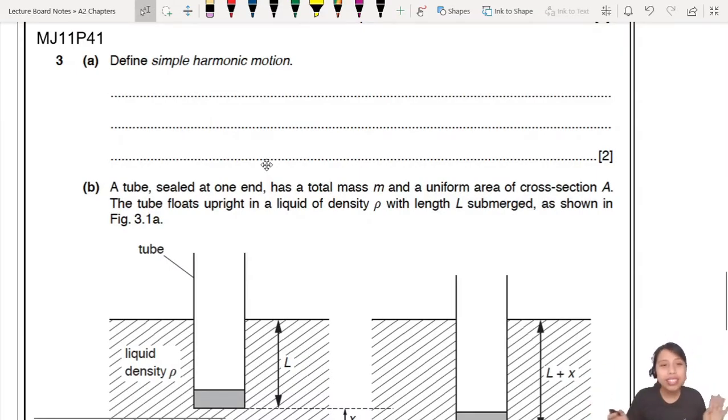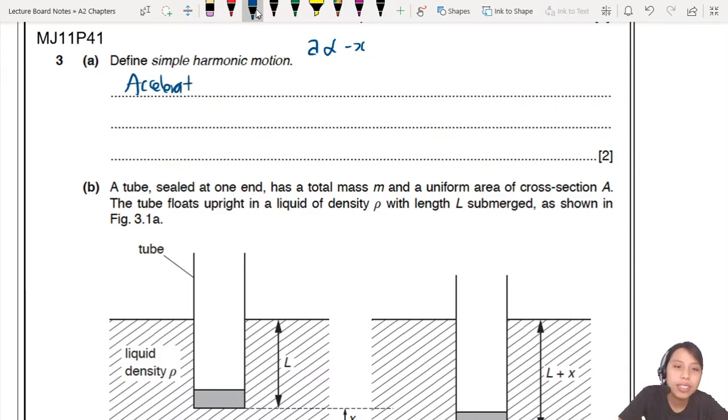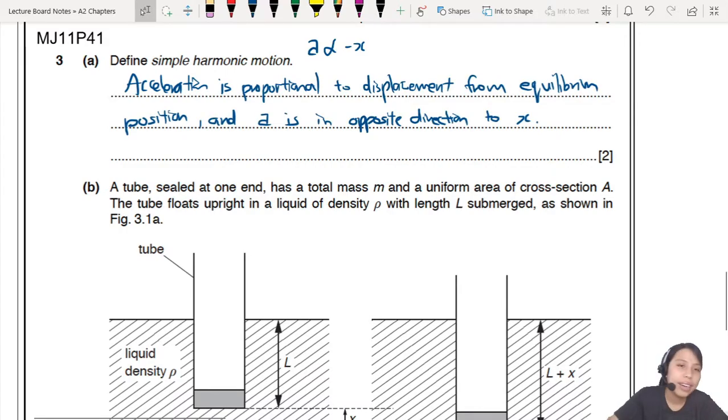First step, let's define simple harmonic motion. Pay attention, this is two marks, so you need to remember there's two key points for simple harmonic motion. One thing is your acceleration proportional to negative x. So, acceleration proportional to displacement from equilibrium position. That's probably your first mark. This is the M1 mark, just talking about the proportional relationship.